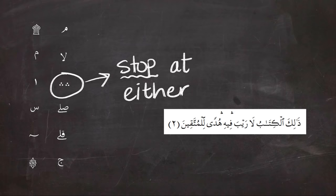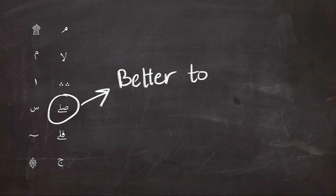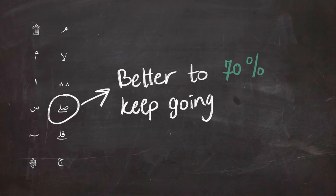Next is the symbol that looks like the word Sill, and it means you better keep going. We could basically compare it to 70% go, 30% don't go, and it means that it is better to keep reading, like in the example.